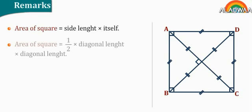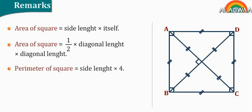Also, area of a square equals half times diagonal length times diagonal length. Perimeter of a square equals side length times 4.